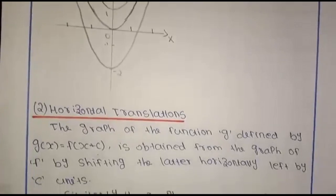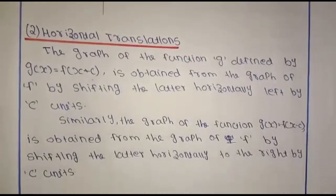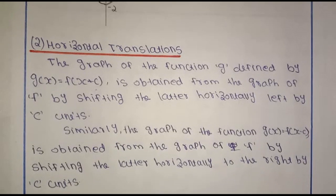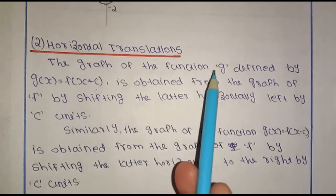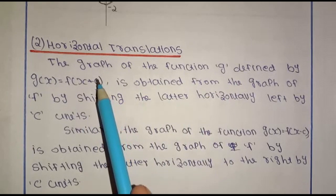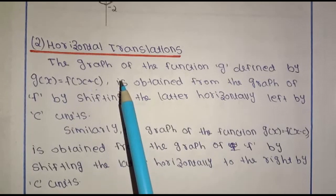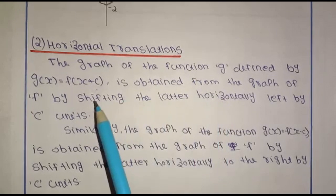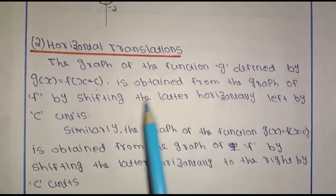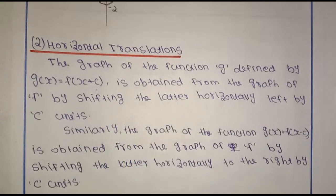This is a horizontal translation. The graph of the function g defined by g of x equal to f of x plus c is obtained from the graph of f by shifting it left by c units.